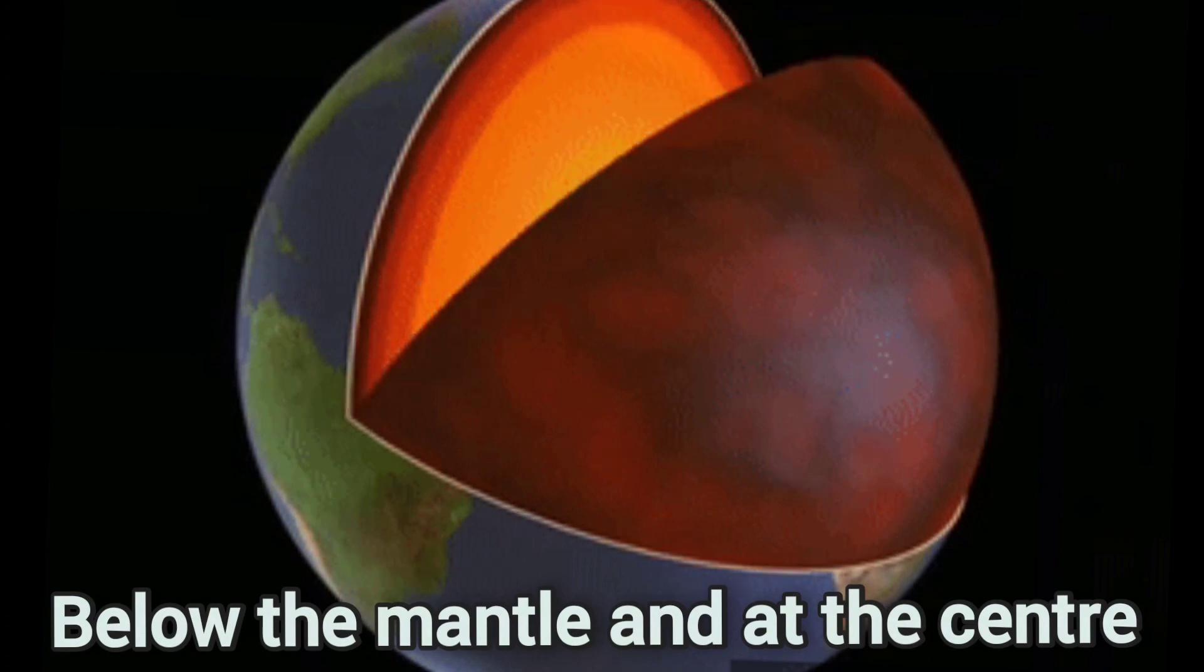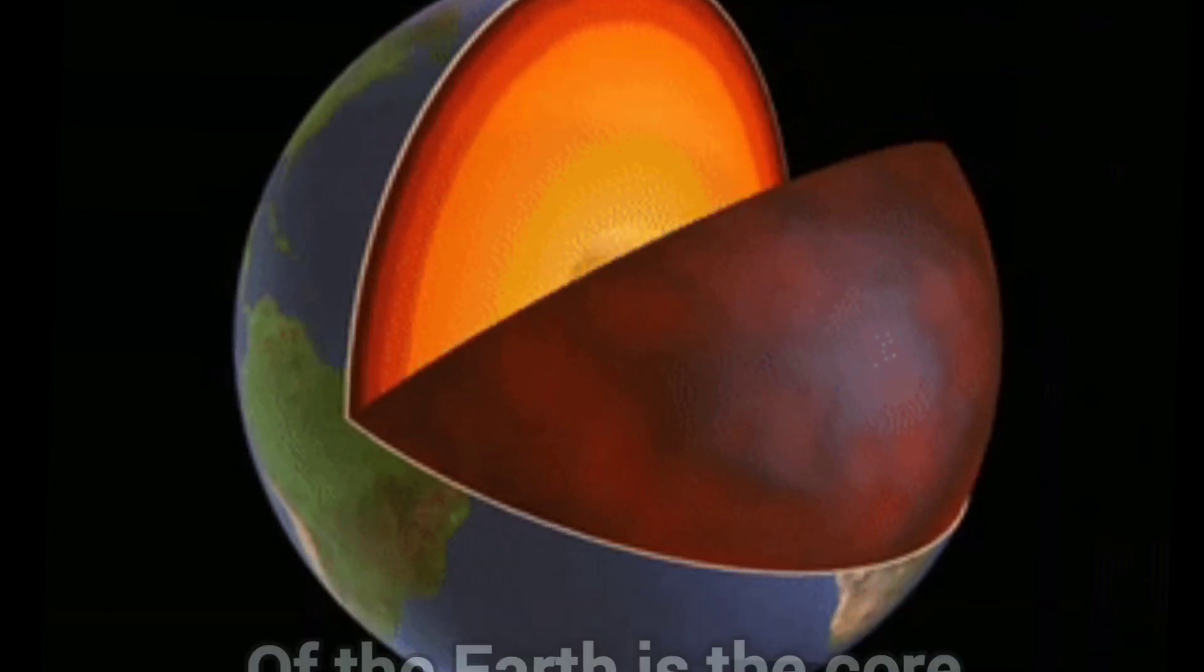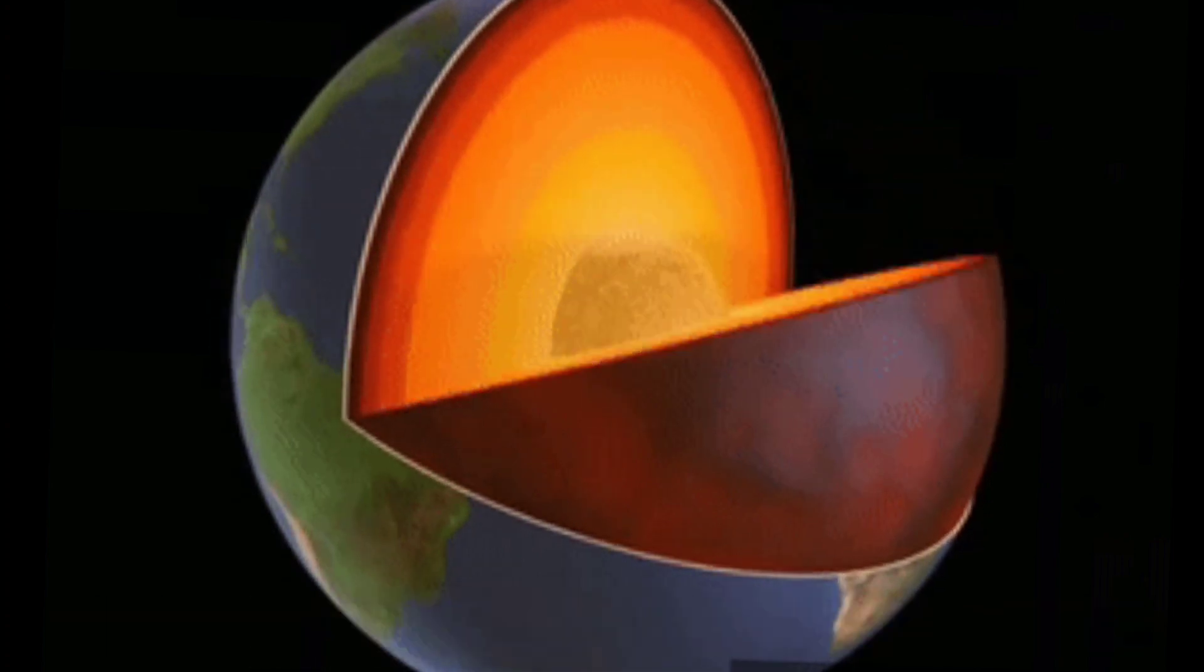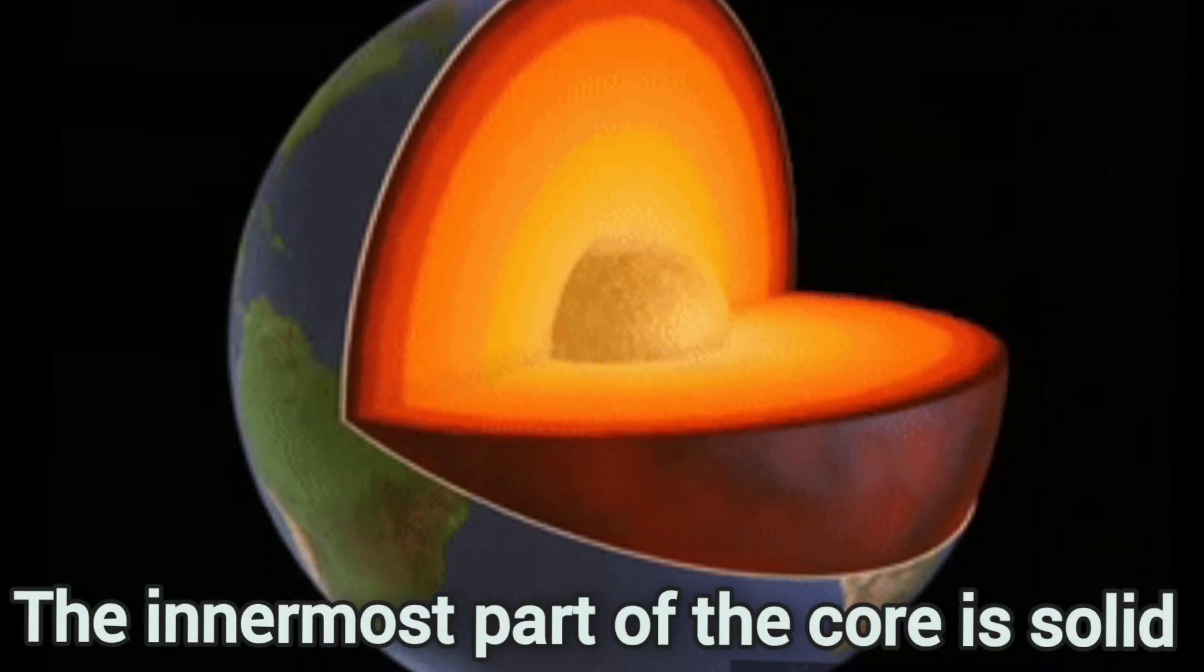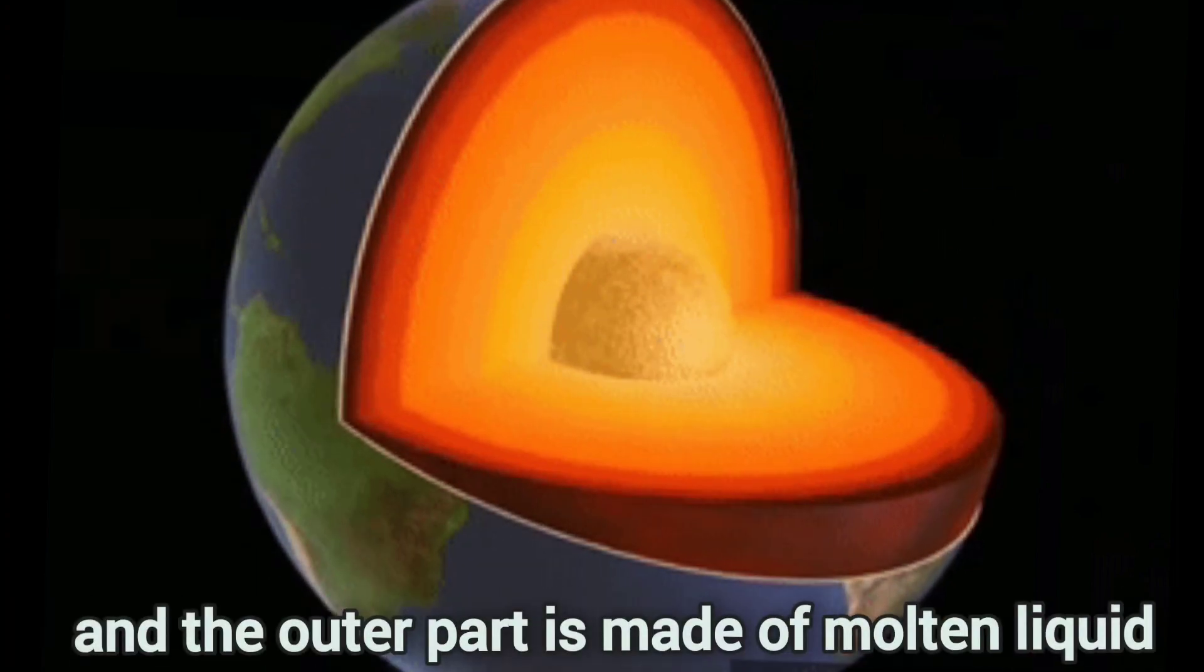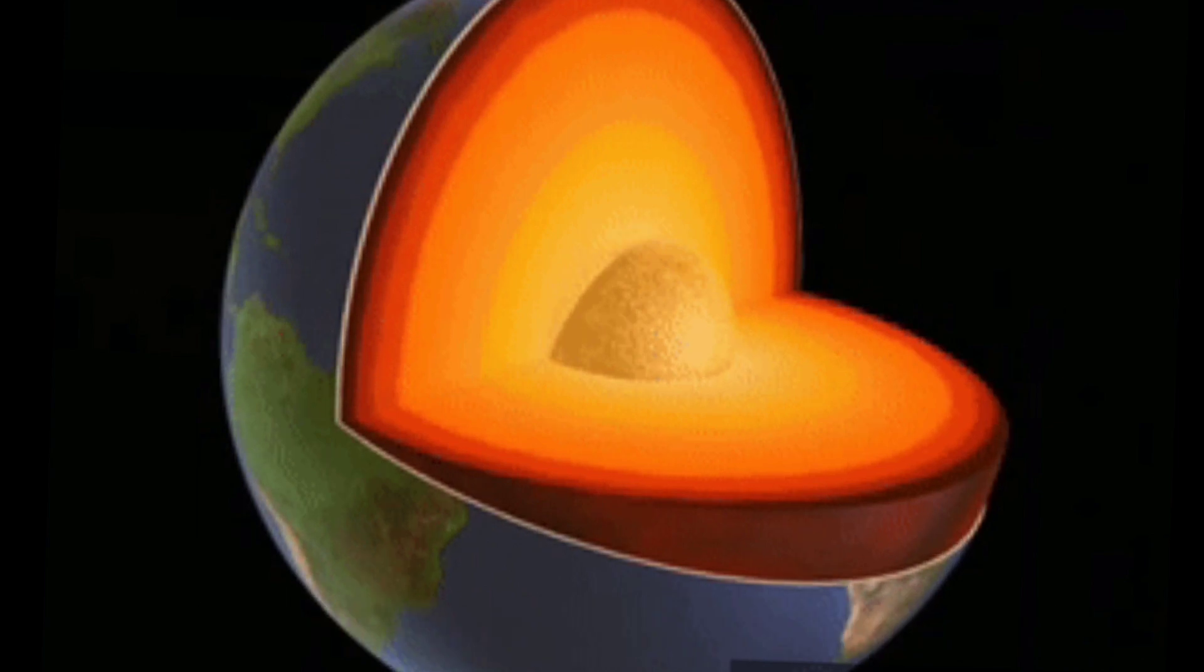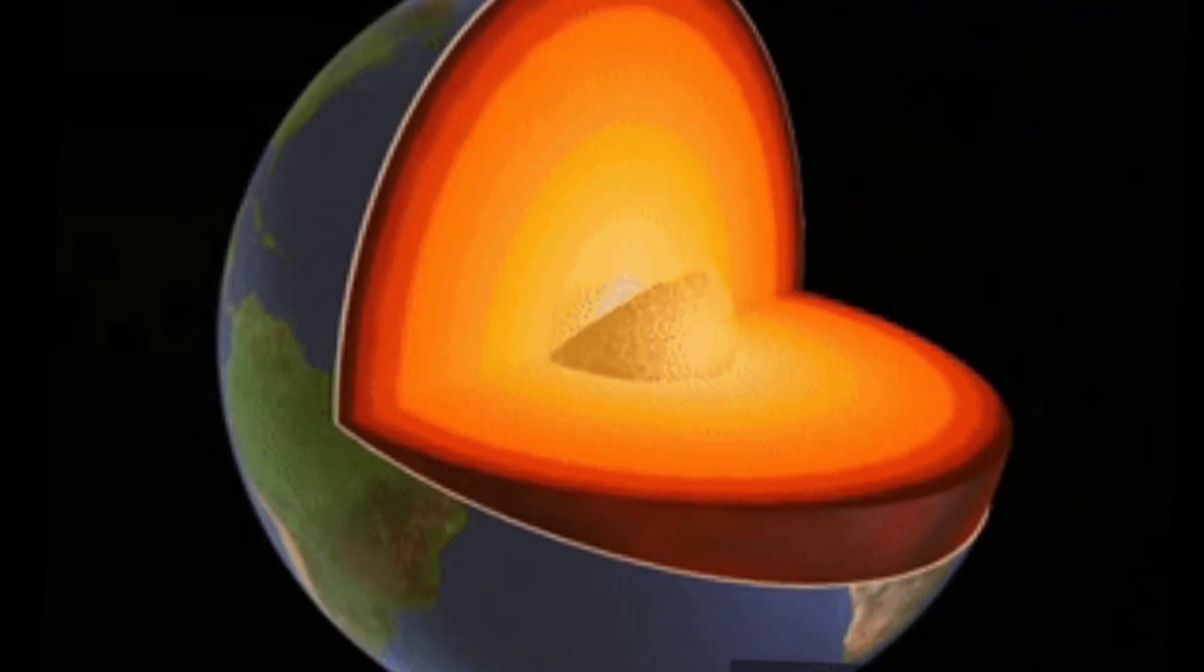Below the mantle and at the center of the earth is the core. The innermost part of the core is solid and the outer part is made of molten liquid. Let us learn more about three layers of earth.